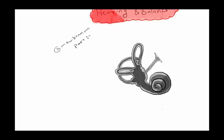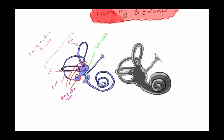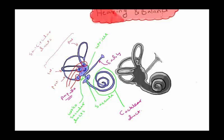The membranous part contains ducts and sacs. The three semicircular ducts are the anterior, the posterior, and the lateral one. At the end of each is a dilation called the ampulla. There are also two sacs — the utricle and the saccule — connected by the utriculosaccular duct. We also have the cochlear duct, the endolymphatic duct, and the endolymphatic sac, which is a closed sac not connected to the CSF.